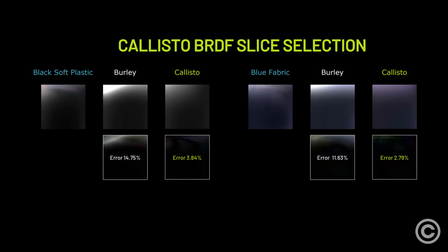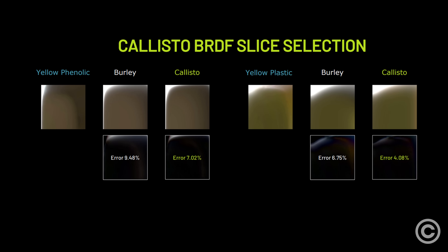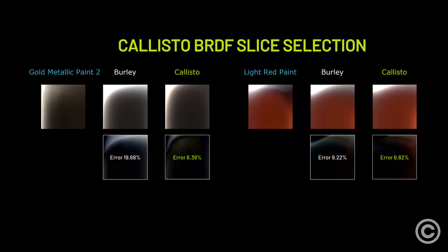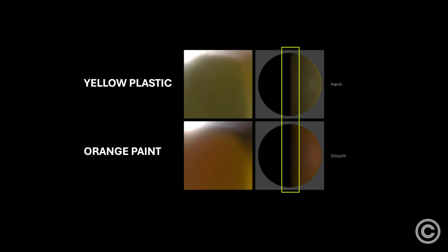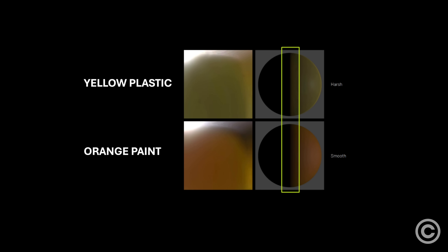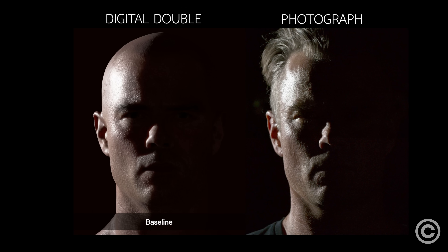But the tints aren't what put the Callisto BRDF so far ahead of the Chan and Burley models. It also accounts for a smooth terminator, which is expressed in real material BRDFs in the upper right corner. A smooth terminator provides a more gradual transition between the lit and unlit surface. Interestingly, real-life plastic doesn't have a smooth terminator, which proves most BRDFs used in today's games and even CGI resemble plastic-like behavior.